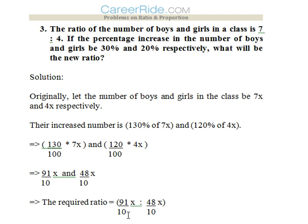Now there is 30 percent increase in the number of boys and 20 percent increase in the number of girls. So the increased number would be 130 percent of 7x and 120 percent of 4x.